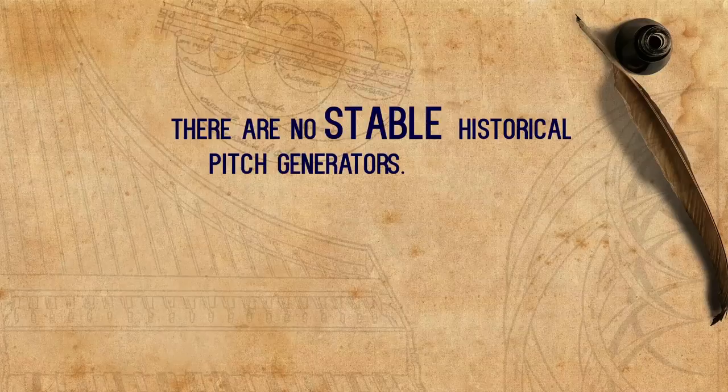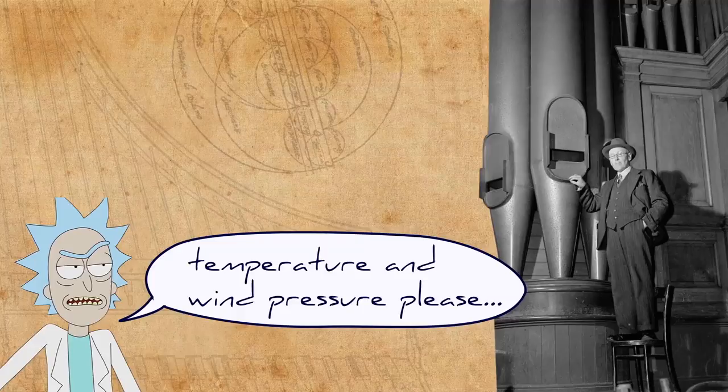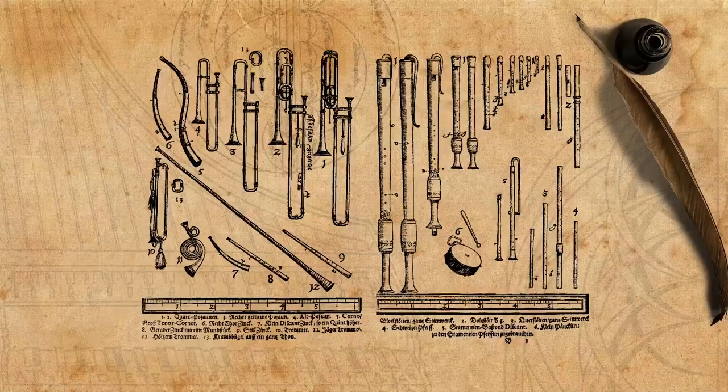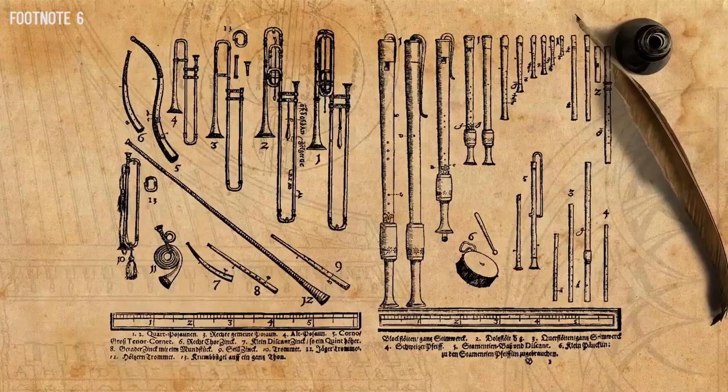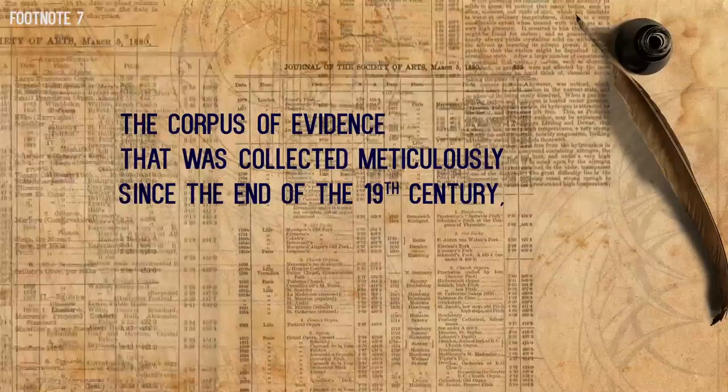Already in the second half of the 19th century, scholars began doing research into the issue of historical pitches. However, such research is very challenging. First, there are no stable historical pitch generators. Even those that seem solid, such as organ pipes, without a technical description which includes the temperature and wind pressure, are hardly reliable for scientific measurement centuries after they were built. This is true for wind instruments in general. Second, the corpus of evidence collected meticulously since the end of the 19th century is, as put by one scholar, 'patchy and contradictory.'